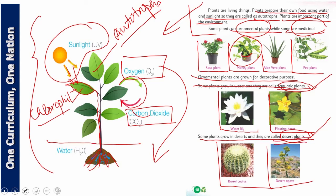And see, you should also remember these names: this is rose plant, this is money plant, this is aloe vera, this is pea plant, and this is water lily, and this is floating heart, and this is barrel cactus, and there is desert agave. So if these come in your exams or wherever you see these plants, your concept will be clear. And further, when you study the characteristics of these plants in the next classes, this concept will benefit you greatly there.